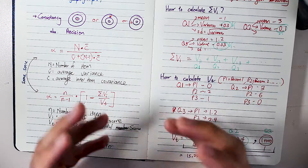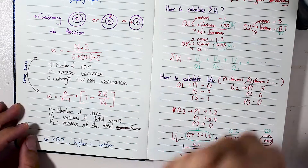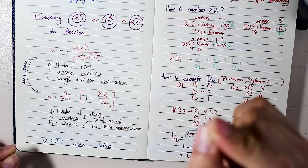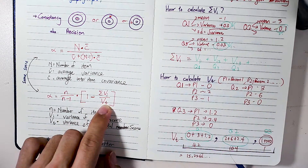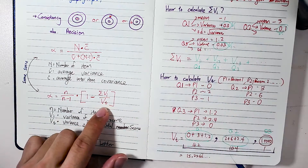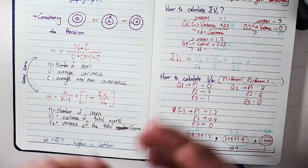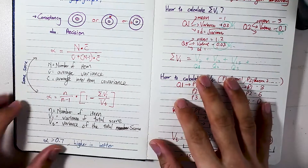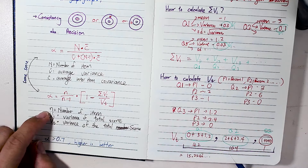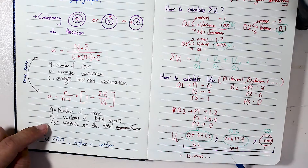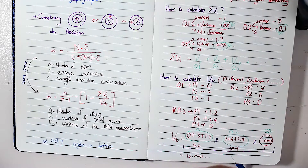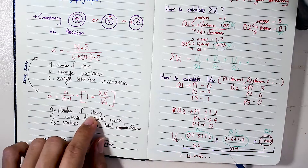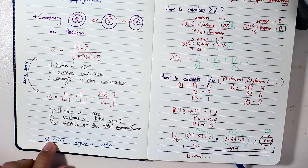In this equation, vi is the variance within a single question — the variance among the sample for one item. vt is the total variance, which we'll go through in more detail shortly. n is the number of items, and vt is the variance of the total score — the variance of the summation of all items.